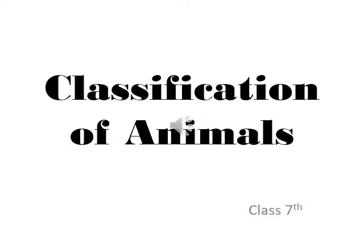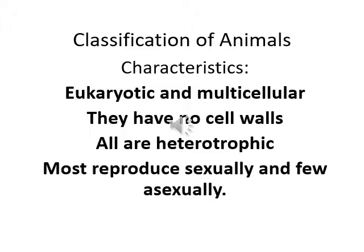We are going to understand the chapter on classification of animals. The first thing we should discuss is the characteristics of an animal. Animal cells have a well-defined nucleus, making them eukaryotic. They are multicellular organisms, which means they are made up of more than one cell.